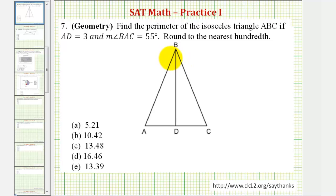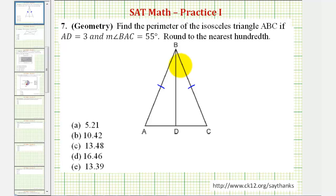To get started, because we have an isosceles triangle, the length of AB is equal to the length of CB — so the length of this side is equal to the length of this side. From the diagram, we'll assume segment BD bisects angle B, and therefore it also is an altitude and bisects side AC, meaning segment BD divides the triangle into two right triangles here on the left and here on the right.